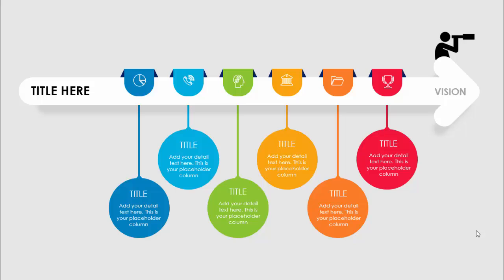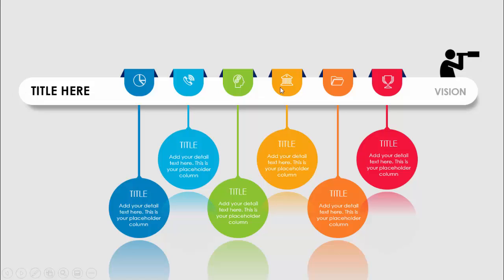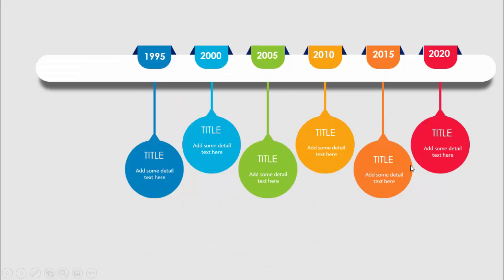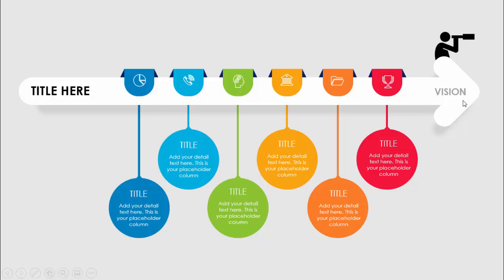In today's tutorial I'm going to show you how to create a six options infographic slide in PowerPoint. You can use this slide for a variety of reasons — for a vision slide with icons and detailed text on each circle, a slide with a straight rectangular shape with reflections, a version without icons with a shadow effect, or even as a timeline. Let's see how to do this in PowerPoint.